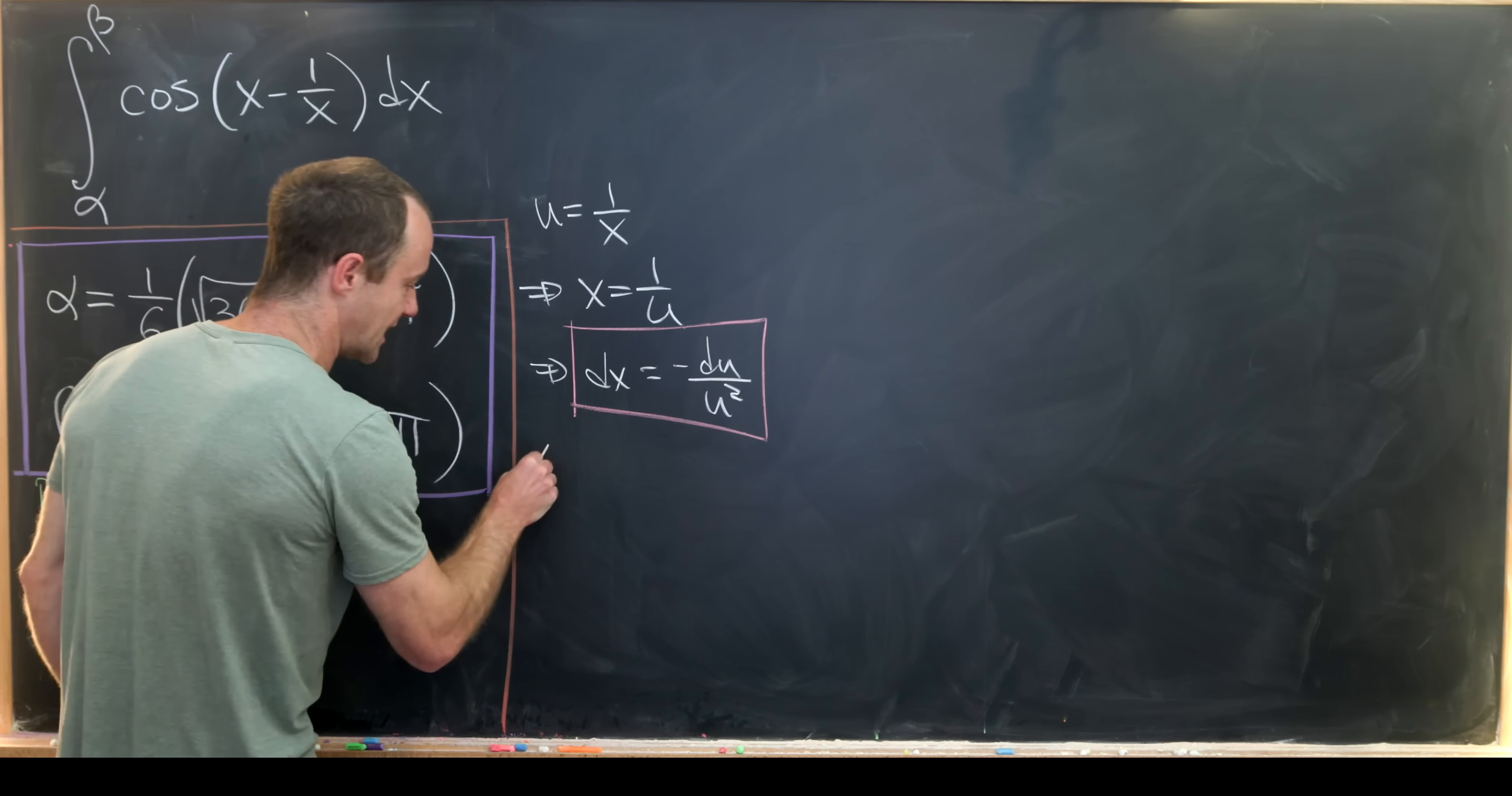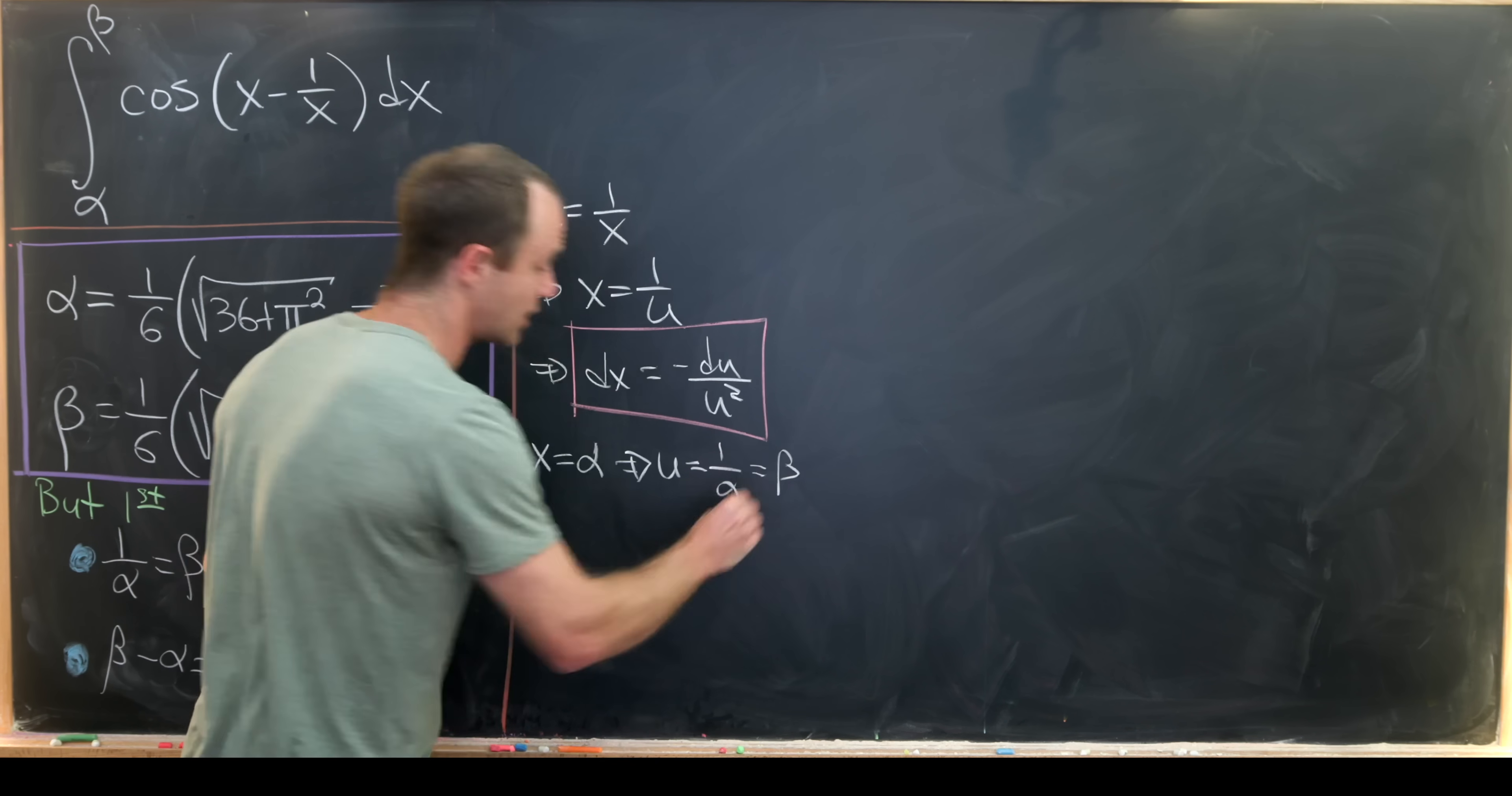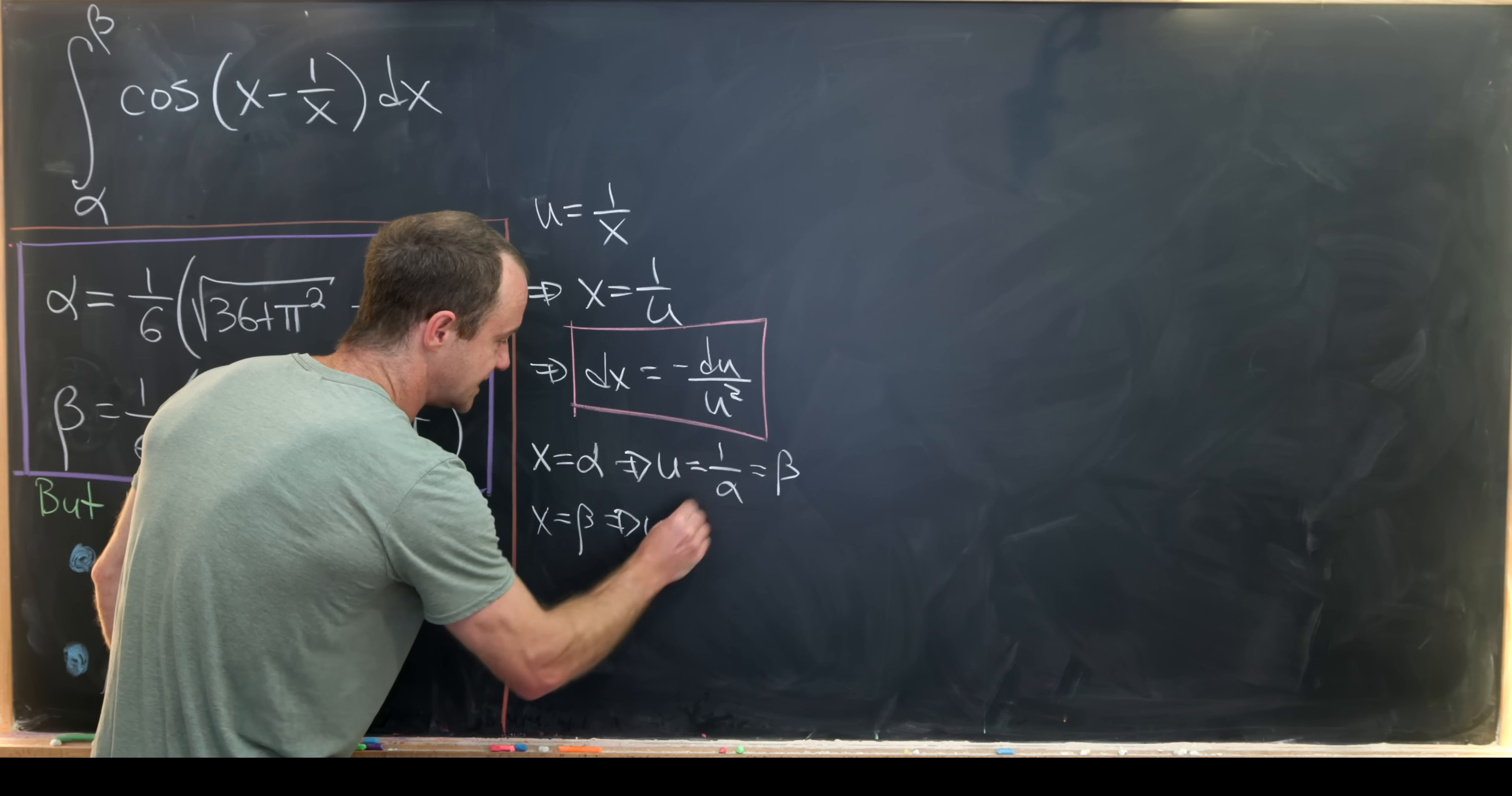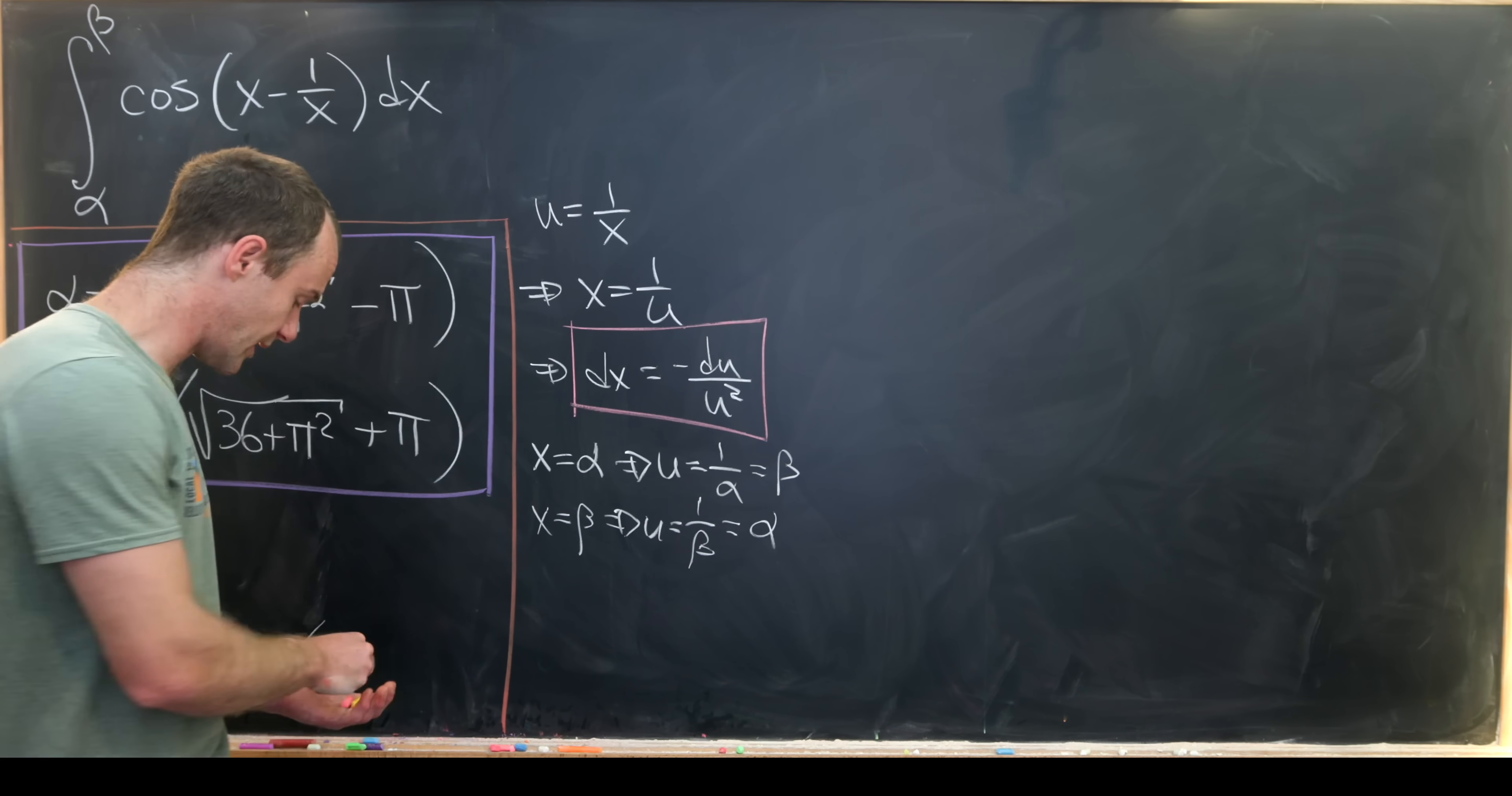But then notice when x is equal to alpha then we see that u is equal to 1 over alpha which we already showed was equal to beta. And then when x is equal to beta that means that u is equal to 1 over beta which is equal to alpha. Again from the symmetric properties that we have over here.